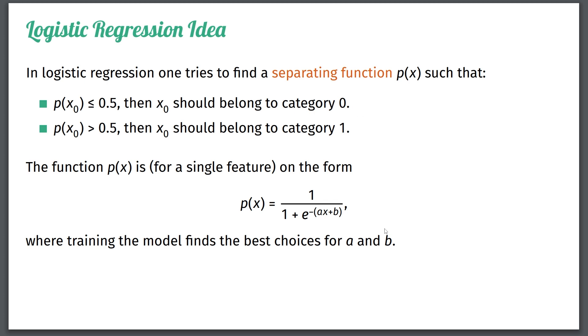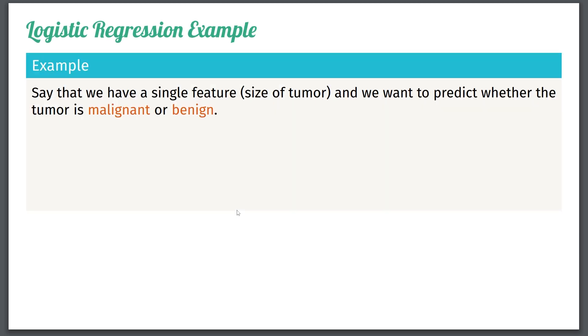You might have many questions. First of all, why does the function look precisely like this? And I'll come back to this later on. Let's just do a quick example to see if we understand the concept. So say that we have a single feature. Let's say the feature is the size of the tumor. And we want to predict whether the tumor is malignant or benign.